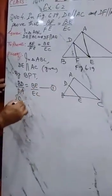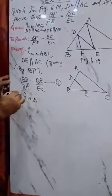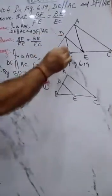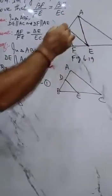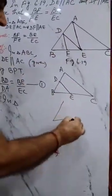Then we'll take triangle 2. Which triangle? It's triangle ABE. In this triangle, DF is parallel to AE.